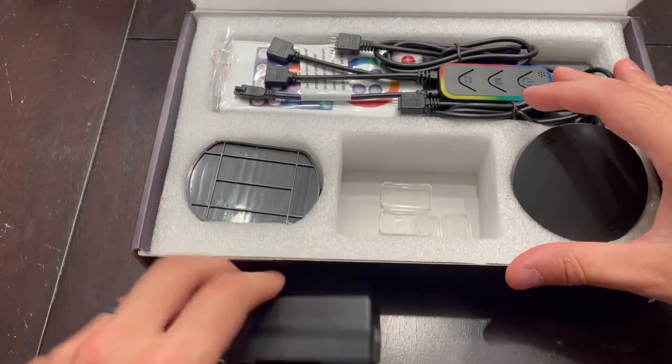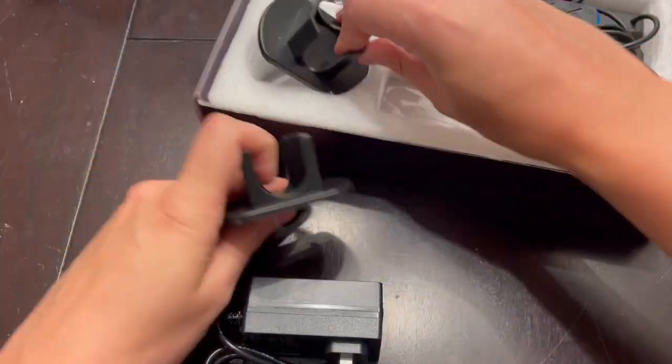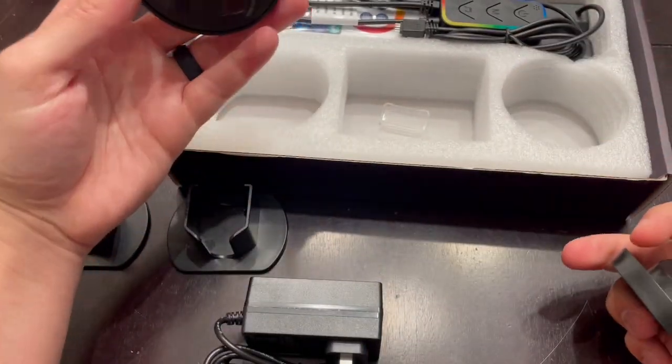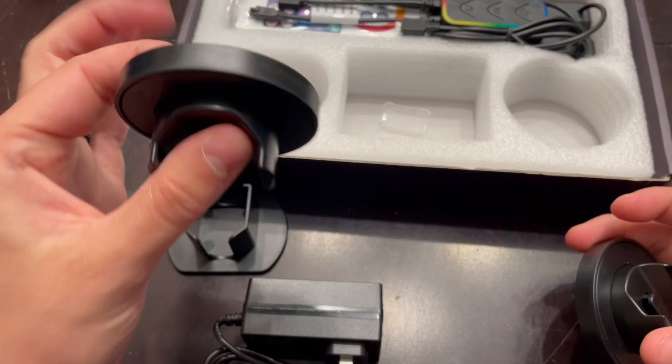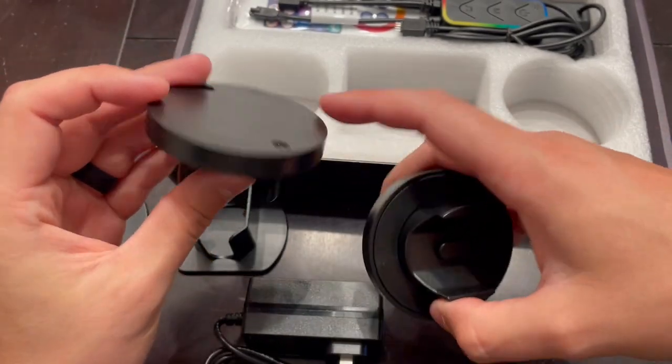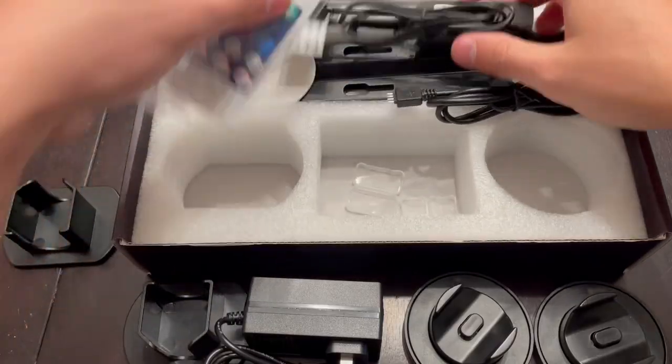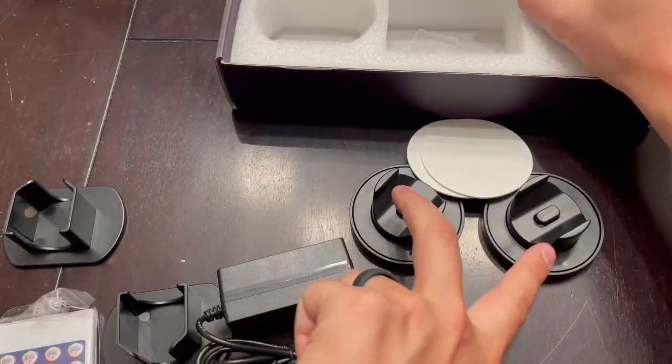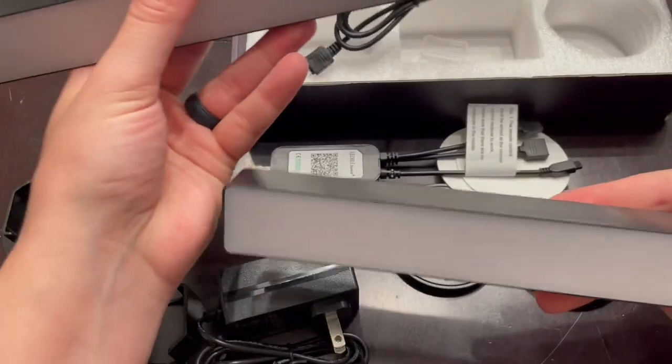We've got the power adapter, the stands for the actual bars, and then these here can go on the back of the bars if you want to clip them to a wall or use velcro or adhesive. We've got our remote, our adhesives for the wall mount plates, and then we have the actual bars themselves here.